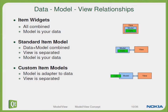Let's take a look at the view relationships — this is a very important slide for understanding the usage of ModelView concepts. The first approach is the item-based widgets, where everything is combined into one class which will have the data, the model and the view. To separate the data and model from the view we can use Qt StandardItemModels, where the data and model are combined and the view is separated. The third approach is to use custom item models, where the view is isolated from the model and the data is also separated from the model, so that the model just interfaces to the data available.